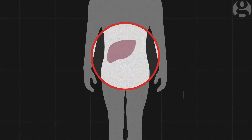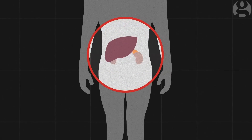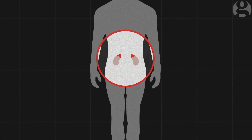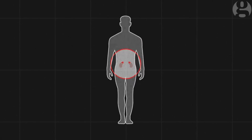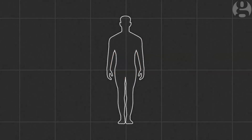Now established inside the body, the Ebola virus targets the liver and adrenal glands. Liver tissue is destroyed, affecting the production of proteins that help blood to clot. Damage to the adrenal glands, which sit on top of the kidneys, harms the body's production of steroids, which are necessary to control normal blood pressure.